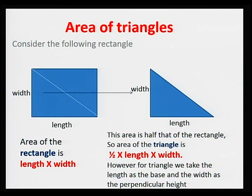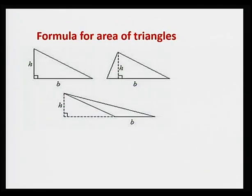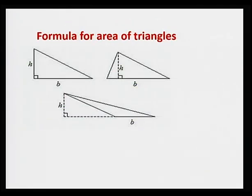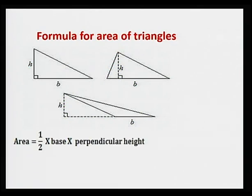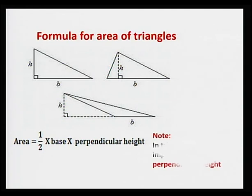However, for a triangle, we take the length as the base and the width as the perpendicular height. This formula is used for any type of triangle. As you can see, the area is half times base times height. B stands for the base and H stands for the perpendicular height. It is very, very important to understand that when using this formula, we always talk about the perpendicular height. The height must make an angle of 90 degrees with the base.